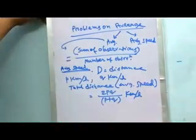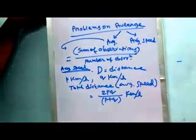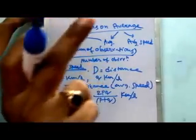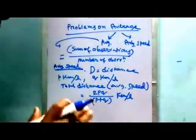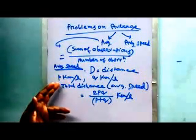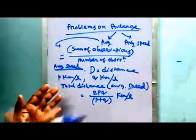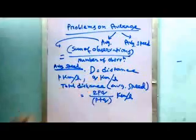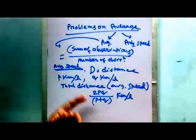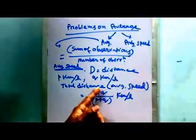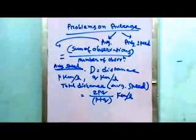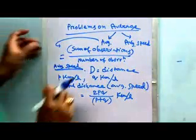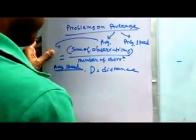That will be the average speed during your journey when you cover it in two types of speed. For example, if D equals 30 kilometers and you run the first 20 kilometers at 10 kilometers per hour and the next 10 kilometers at 20 kilometers per hour, the average speed will be 2 times 20 times 10, divided by 20 plus 10.